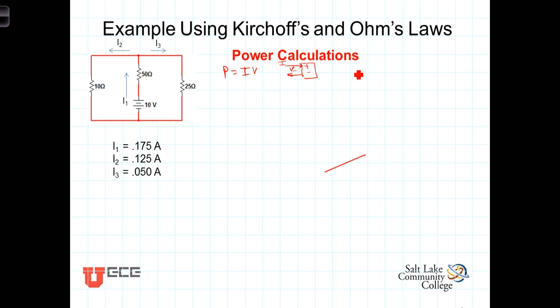On the other hand, P is equal to negative I times V if the current is referenced into the negative terminal and out the positive terminal.